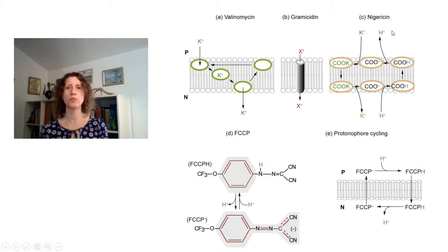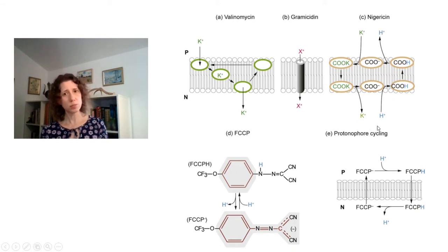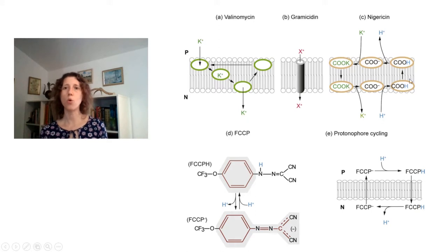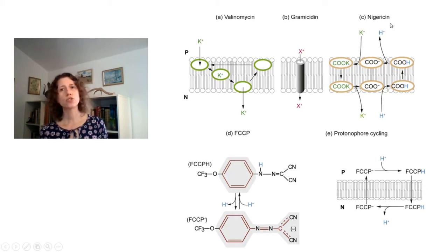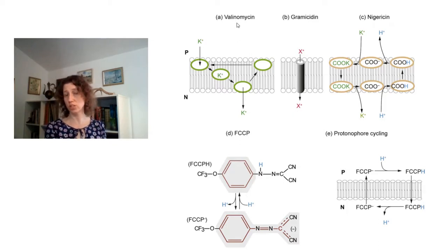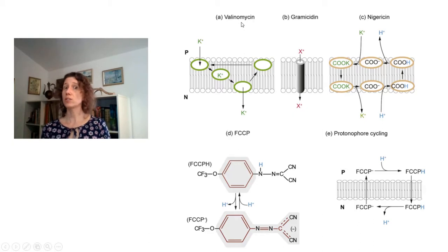Nigericin is an interesting ionophore because when it binds potassium, it must lose a proton, and when it releases potassium, it binds a proton again. It traverses the membrane whether bound to potassium or a proton, resulting in a potassium-proton exchanger — entry of potassium coupled to release of a proton. Comparing transport by nigericin and valinomycin is useful for determining whether a physiological transport process is a uniport or an antiport.